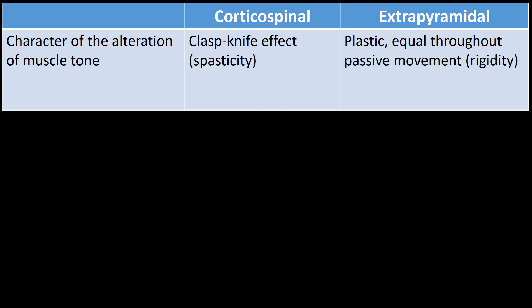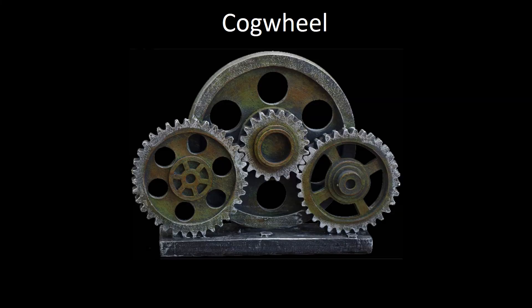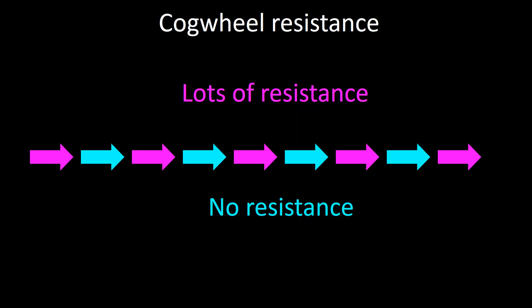The second type of extrapyramidal muscle tone alteration is intermittent and is called cogwheel rigidity. As you attempt to move the arm, you will feel loss of resistance, followed by a quick giving in, followed by loss of resistance again, and so on.